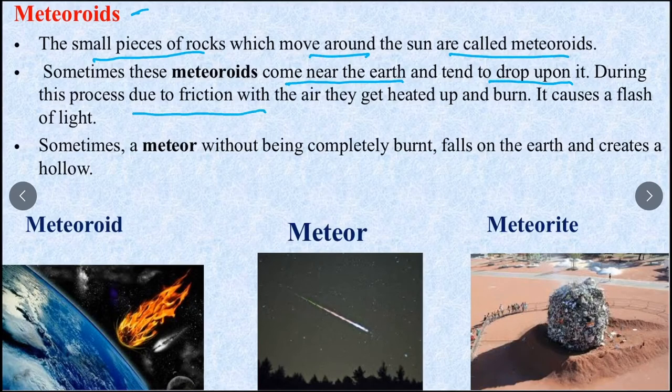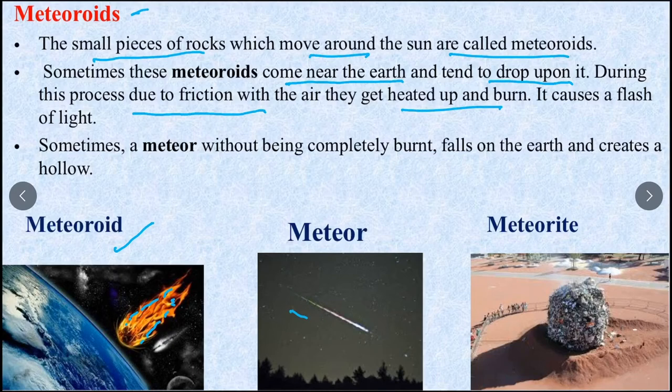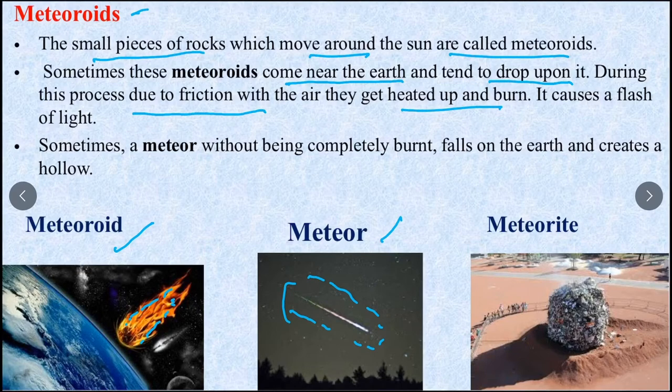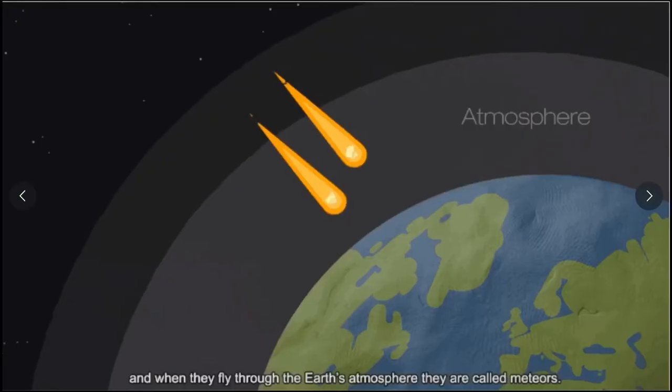Meteorites - these are small pieces of rock which move around the Sun. Asteroids and meteorites both revolve around the sun, but asteroids are found in a fixed orbit between Mars and Jupiter while meteorites can be anywhere. When meteorites come near Earth, they tend to drop upon it.